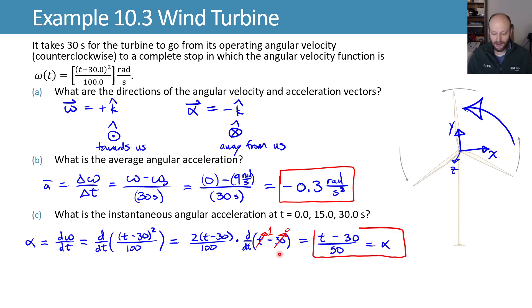Combining this all together, we end up with an angular acceleration of (t-30)/50, which gives us units of radians per second squared. That's our function.